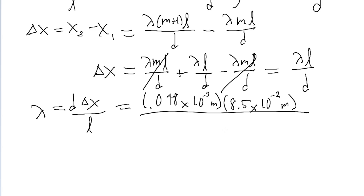All divided by the distance between the sheet and the screen which is 6.5 meters. We put this into a calculator and we find a wavelength of about 6.3 times 10 to the power of negative 7 meters.